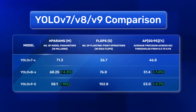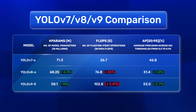The number of floating point operations also increases, which is bad. However, there is a 1.4% bump from v7 to v9 and a 36% leap from v7 to v8. Theoretically, YOLO v8 should have a slower inference speed.